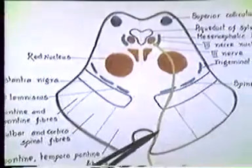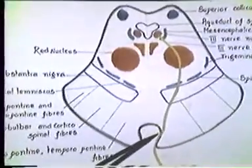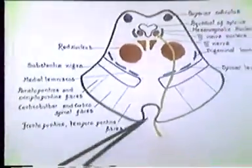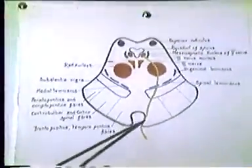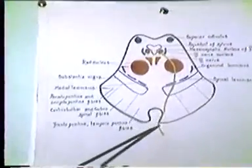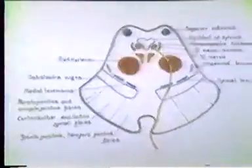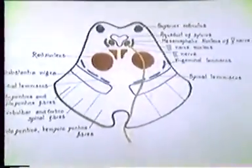They pass through the substantia nigra, and having passed through the substantia nigra, they come out of the basis pedunculi into the interpeduncular fossa. That is where the oculomotor nerve emerges. Having told you about the situation of the nucleus, I go on to the nucleus itself.